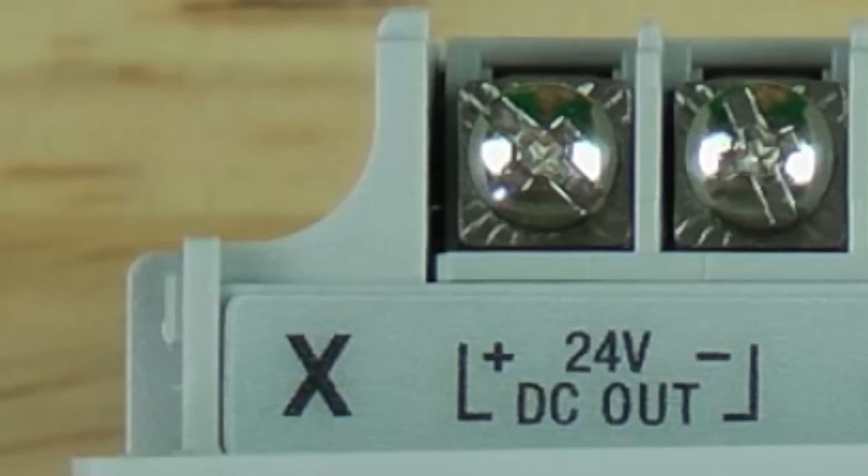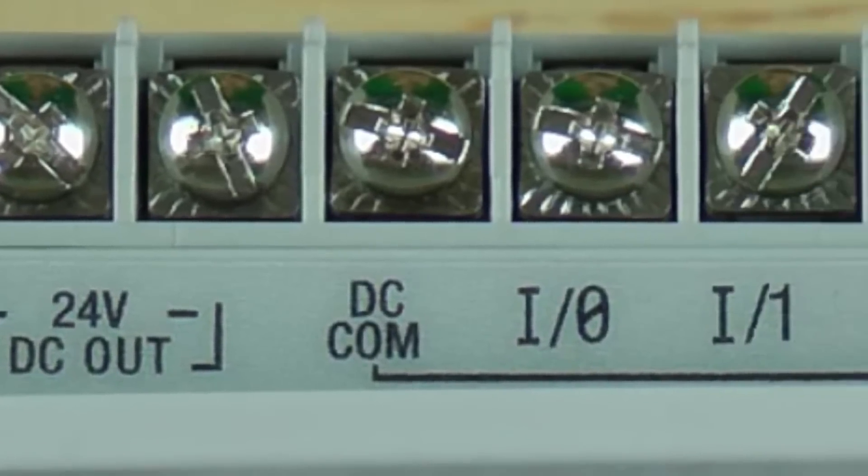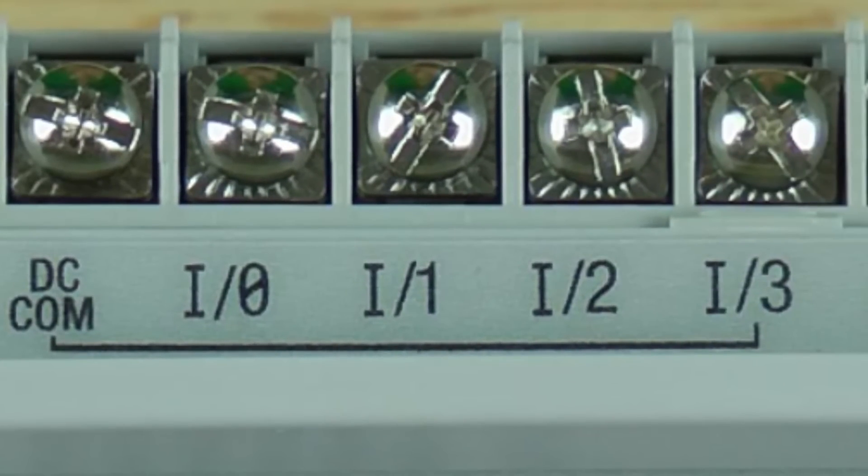It only supplies about 200 milliamps, and that's typically only enough power to drive a few sensors. Next we see the first group of inputs. Each of these first four inputs, I0 through I3, share the same DC comm terminal.